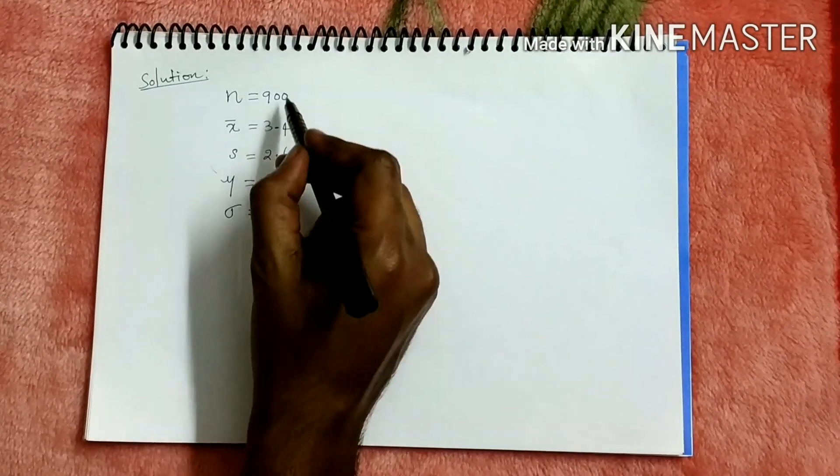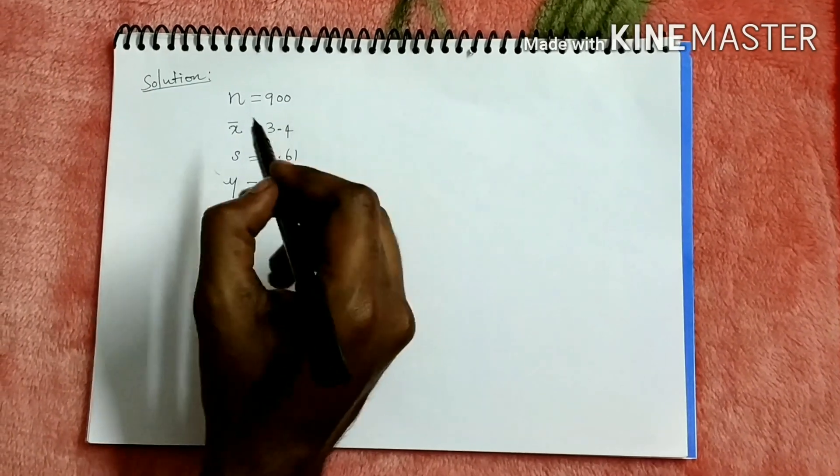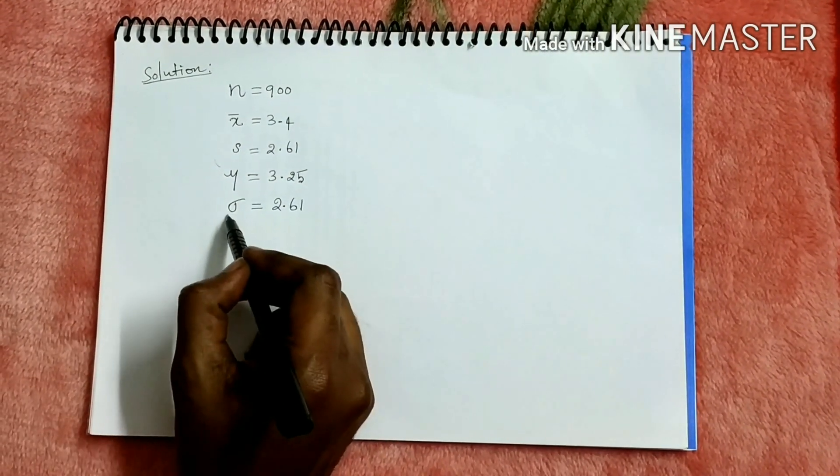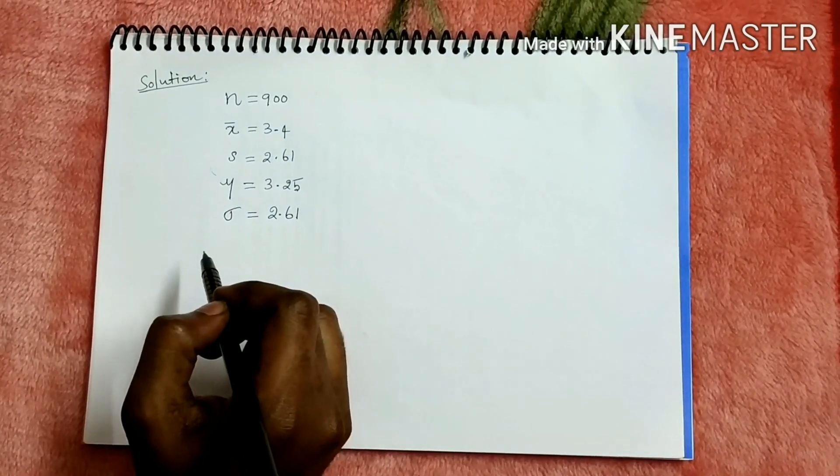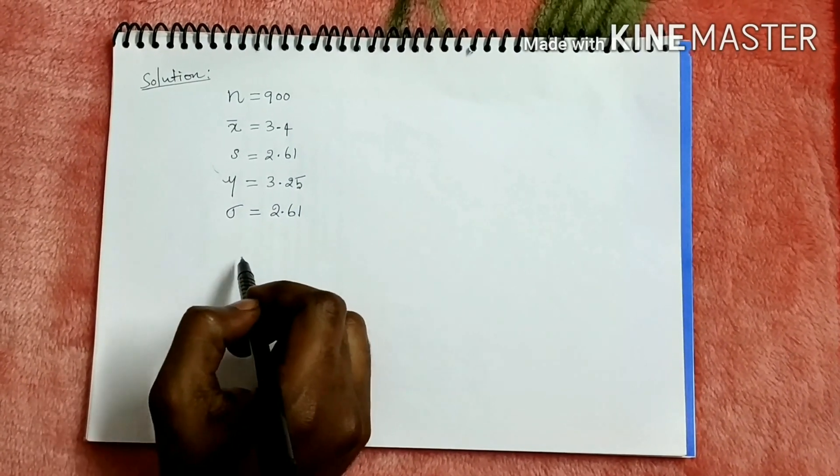So n is greater than 30, that means large sample. Sigma is also given, that means we have to use Z test.